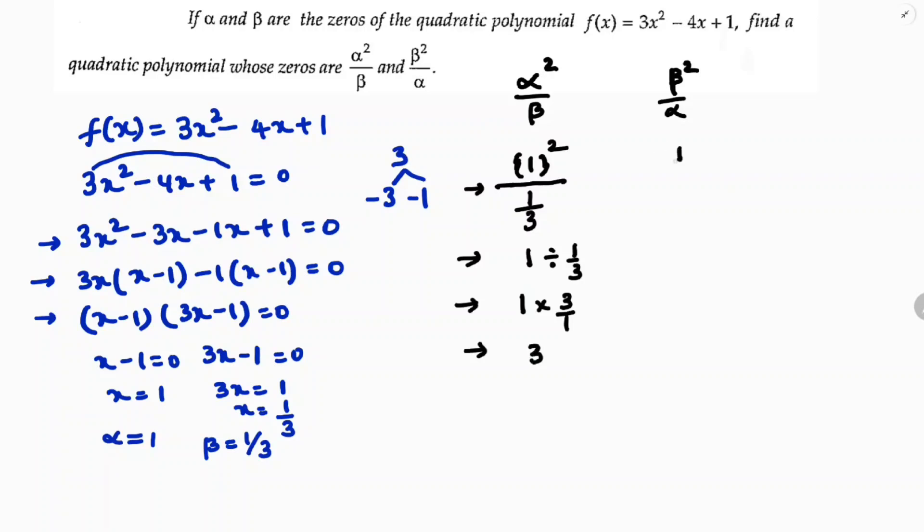The other one is β²/α. Beta is (1/3)² divided by alpha which is just 1. So it is 1/9. So new alpha is 3 and new beta is 1/9. These are new because we need to find a polynomial with these zeros now.